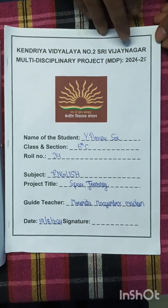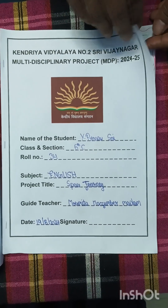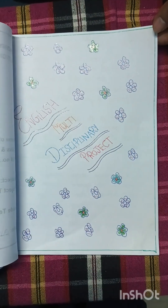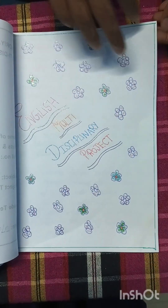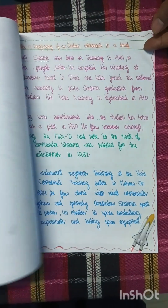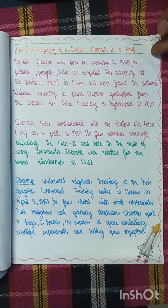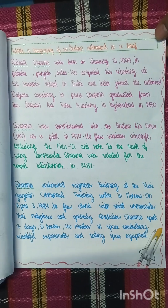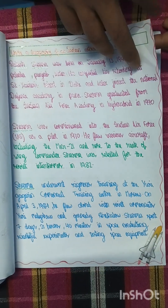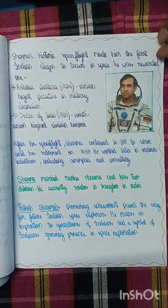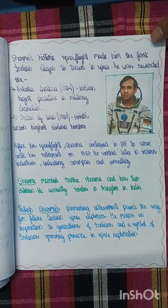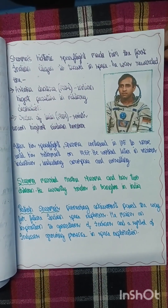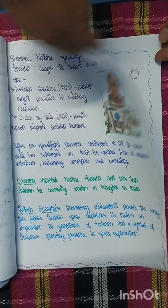This is my English MDP project. Project title: Space Journey. My guide teacher for English is Momitha ma'am. In this, I have written the biography of an Indian astronaut named Rakesh Sharma. Thank you.